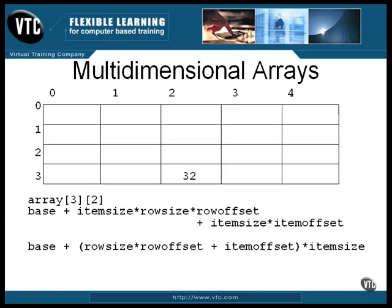In this example, to address item three two, you would simply calculate the address this way. As you can see, it's nothing more than a base address plus a constant.